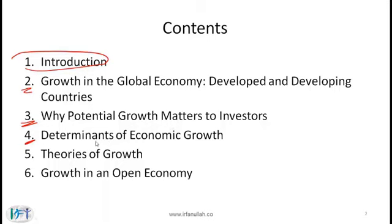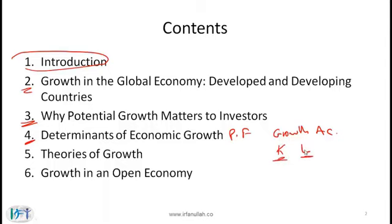Section 4 talks about the determinants of economic growth. Here we look at the production function and spend a lot of time on the growth accounting formula, examining how different factors such as capital and labor impact the growth rate of the economy. We start simply with capital and labor, then look at other factors such as R&D, different kinds of capital, infrastructure, and development from the government perspective.